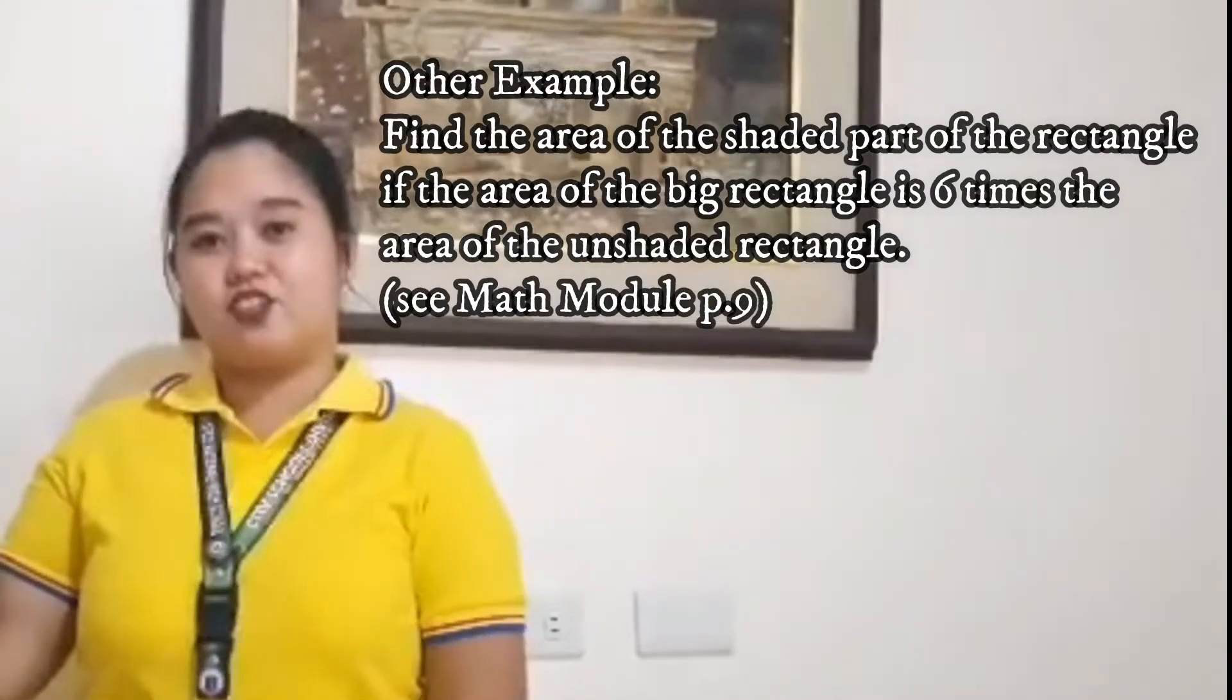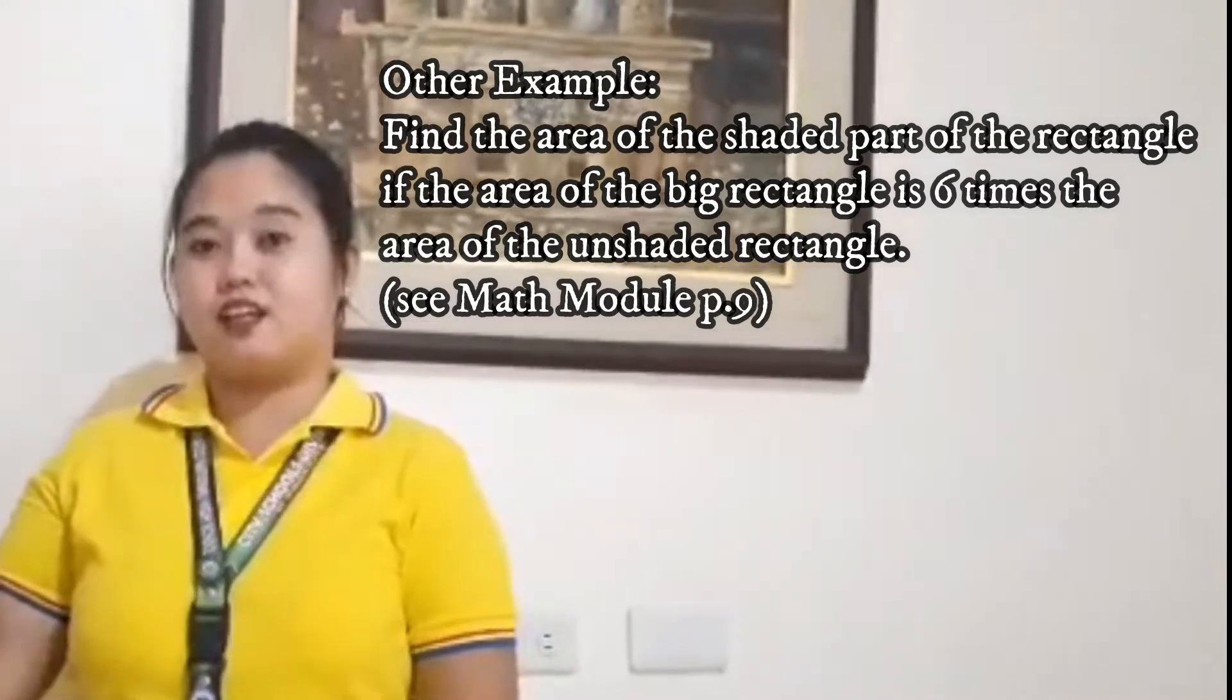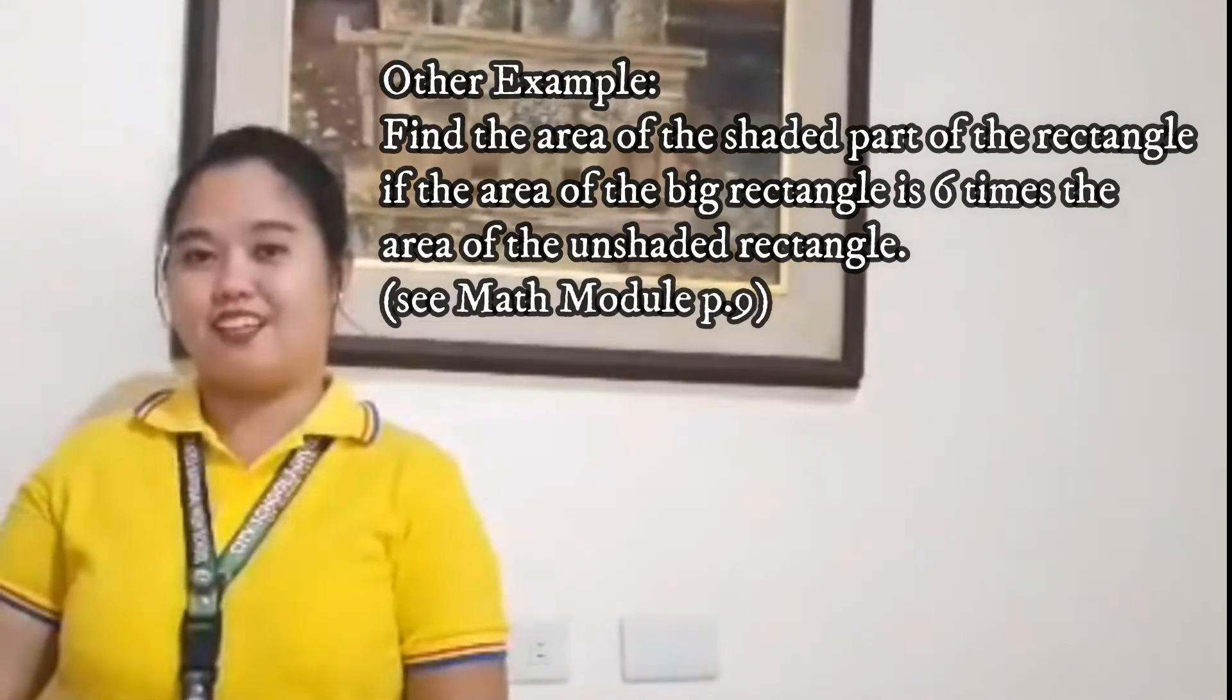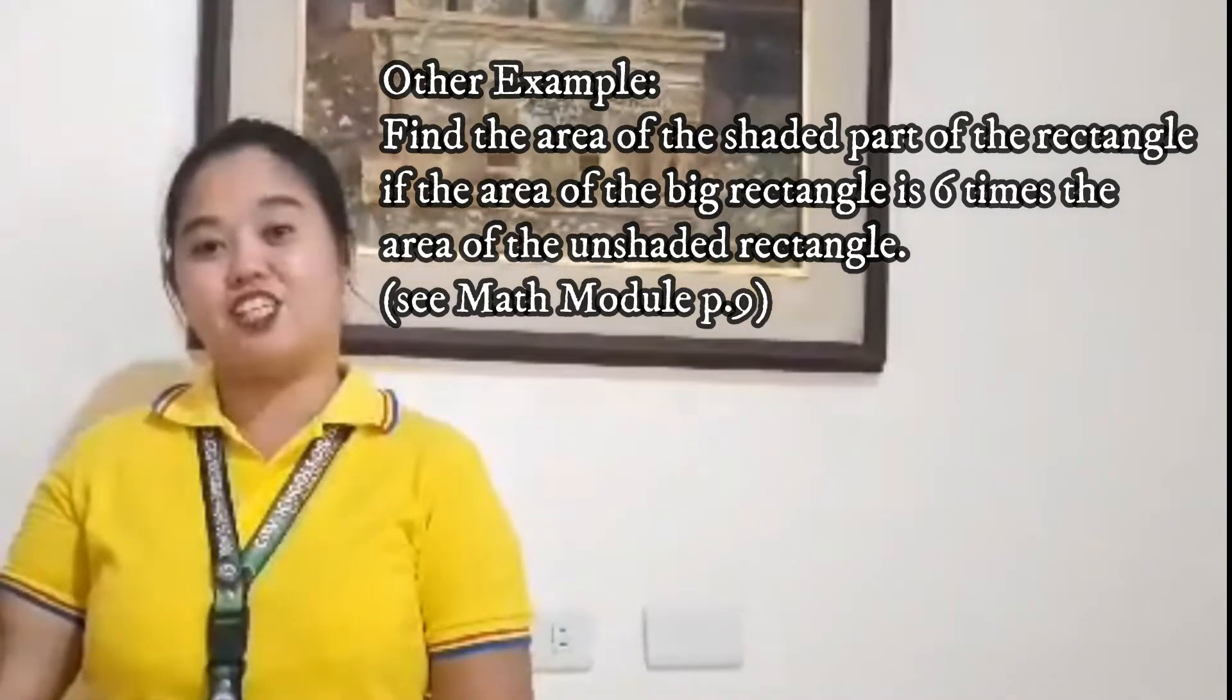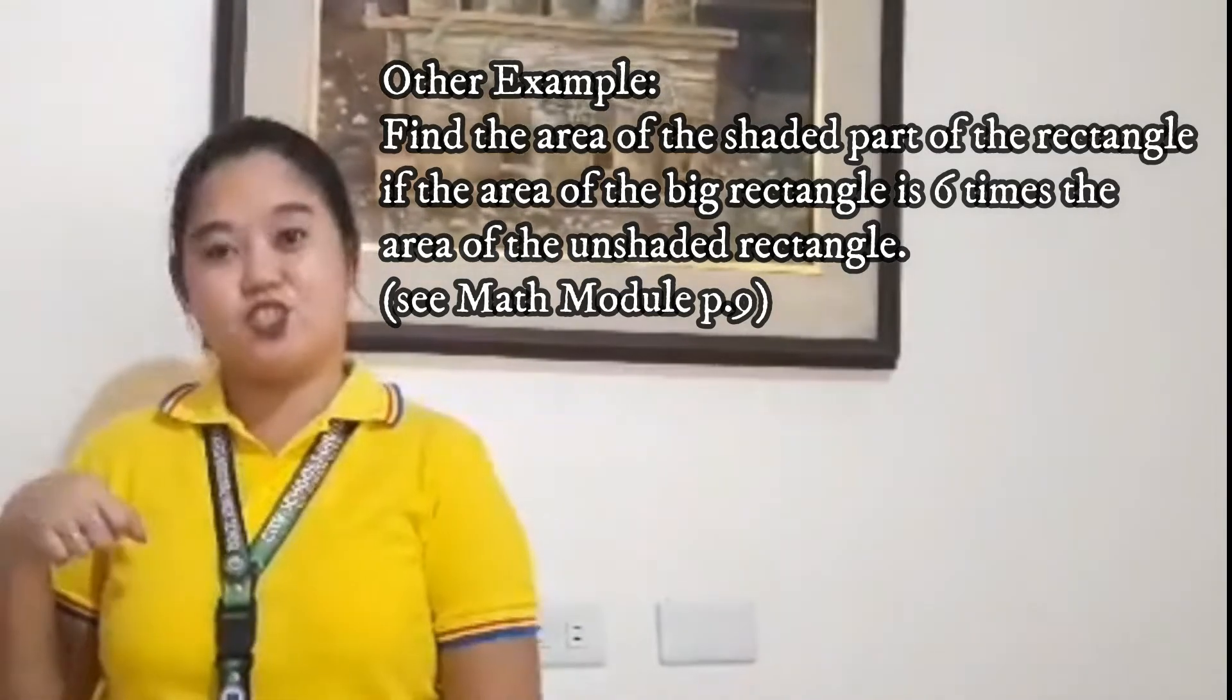For example 2: Find the area of the shaded part of the rectangle if the area of the big rectangle is 6 times the area of the unshaded rectangle. Here is the solution.